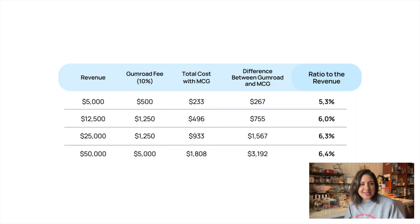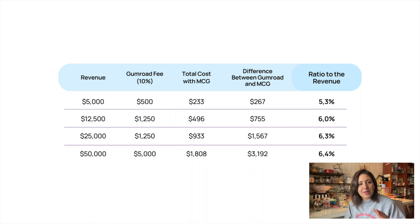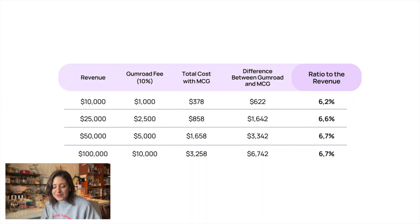Let's increase the product price from $20 to $50 and see the difference again. As you can see, the difference and the ratio of this difference to the revenue increases even more — saving at least 5% up to 6.4% of revenue. If we increase the price further from $50 to $100, here is the new table, and we can save up to 6.7% of our revenue.